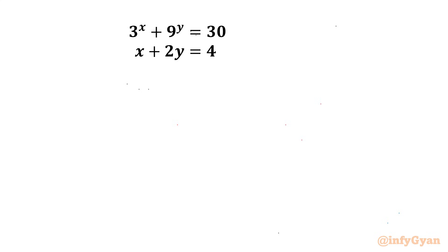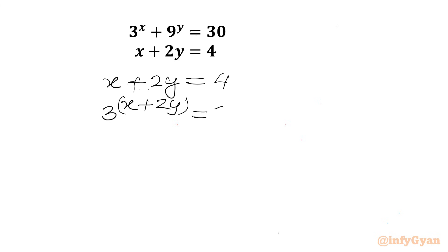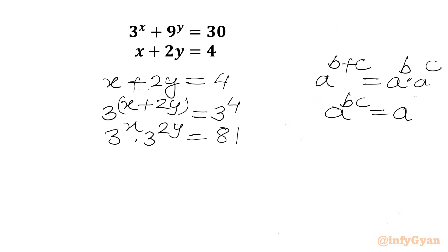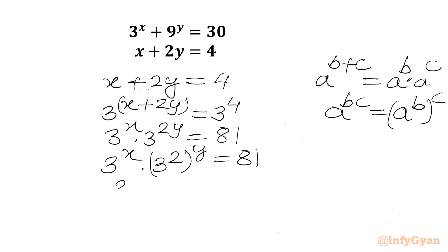Let's get started with the second equation: x + 2y = 4. Let's put base 3 on both sides, so we can write 3^(x+2y) = 3^4. Using the exponent property a^(b+c) = a^b × a^c, we write 3^x × 3^(2y) = 81. Then using a^(b×c) = (a^b)^c, we get 3^x × (3^2)^y = 81, which gives us 3^x × 9^y = 81.